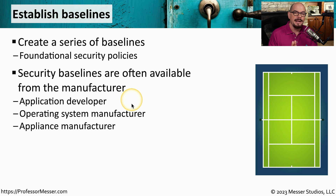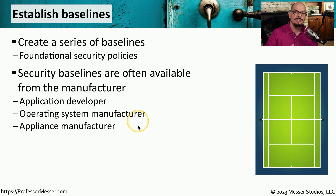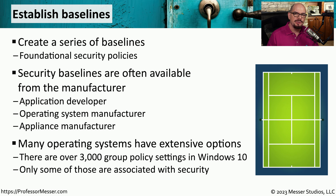You can contact the developer of the application, and they can provide you with a baseline they've created. This would probably involve permissions of files stored on the file system and configuration settings within the application itself. Or you can get information from the operating system manufacturer — for example, go to Microsoft and get information about their security baselines. And if you're using any purpose-built appliances, those manufacturers may also be able to provide you with additional security settings. When you start building that initial security baseline, it can almost be overwhelming, as there are many different settings that may need to be configured.